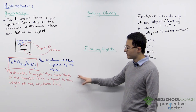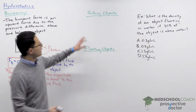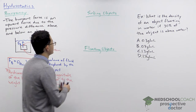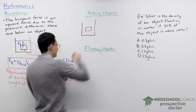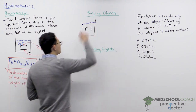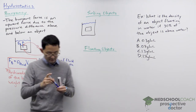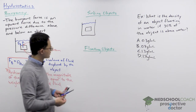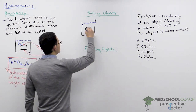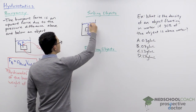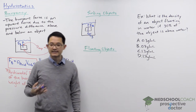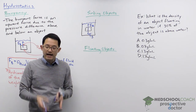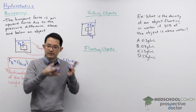To apply the buoyant force, let's look at two situations: sinking objects and floating objects. For sinking objects, we draw the object fully immersed in the fluid and draw the free body diagram — the weight of the object F_g acting downward, and the buoyant force acting upward. If the object is sinking, the weight must be greater than the buoyant force.